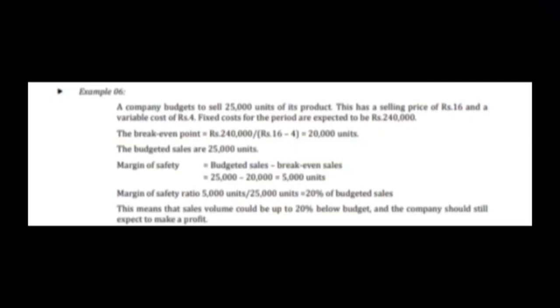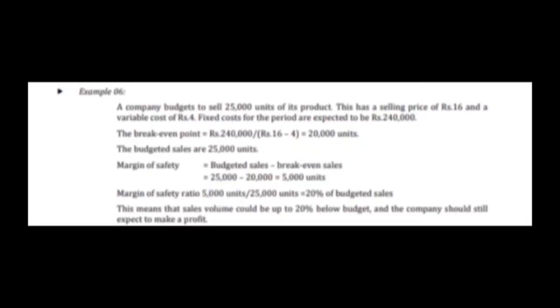Budgeted units are 25,000. Margin of safety = budgeted sales − break-even sales = 25,000 − 20,000 = 5,000 units. Margin of safety % = 5,000 ÷ 25,000 × 100 = 20%. This means sales volume can be up to 20% below budget and the company should still expect to make a profit — so it has a lower chance of suffering a loss.